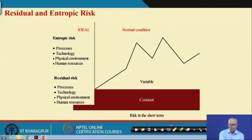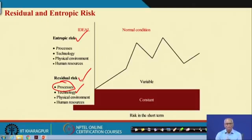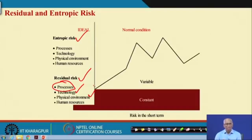One type is residual risk and the other is entropic risk. As a designer, you have to design processes and bring technology — whether it is a two-wheeler with electric, diesel, petrol, or gas power. What technology are you using? The physical environment also matters — temperature, wind, the whole physical environment around where you are working. In industries, if it is a hot environment, the design should be different.